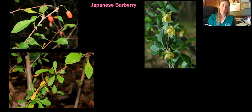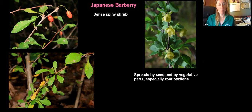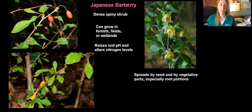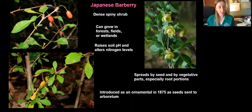Next we have Japanese barberry. This is a good shrub to recognize when it's very small, before it becomes full grown and too hard to remove. Notice the spatula-like leaves. It develops yellow flowers in the spring, followed by red berries later in the season, and there are very sharp thorns on the twigs. This shrub spreads by both the fruits and vegetative parts, especially root portions. It can grow in forests, fields, or wetlands — most of the time we see it in the woods. It has the ability to raise the soil pH and alter nitrogen levels, which can impact other native plants around it. It was introduced as an ornamental — seeds sent to an arboretum in 1875 — and was promoted for use in hedgerows, for dyes, and for jams.